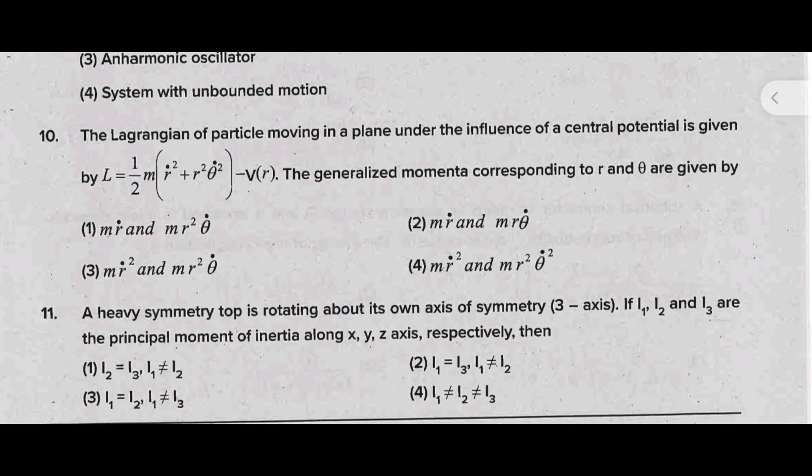The Lagrangian of a particle moving in a plane under the influence of a central potential is given by L equal to half M R dot square plus R square theta dot square minus V of R. The generalized momenta corresponding to R and theta are given by - the correct answer is option 1, that is M R dot and M R square theta dot.